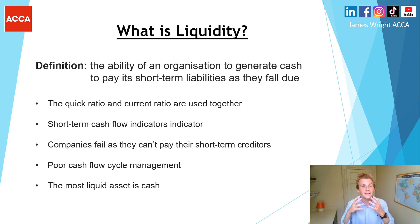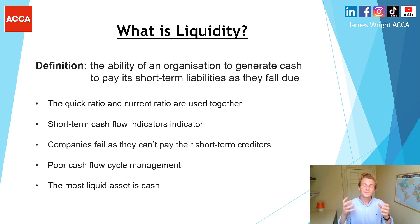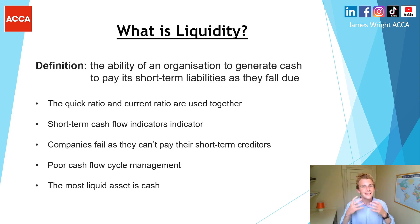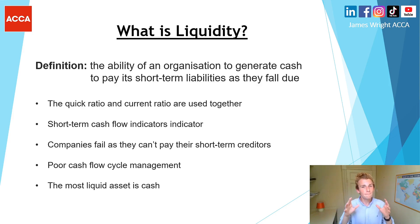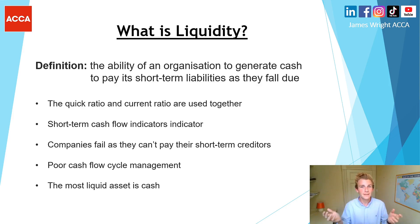So what is liquidity? It's the ability of an organization to generate cash from its operations to pay its short-term liabilities as they fall due — this could be trade payables, creditors, or a bank overdraft. The quick ratio and the current ratio are used together as short-term cash flow indicators, showing how well a business manages its cash flow cycle. Companies will fail if they can't meet short-term obligations to creditors and suppliers.